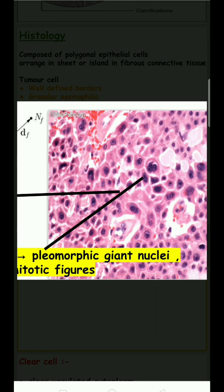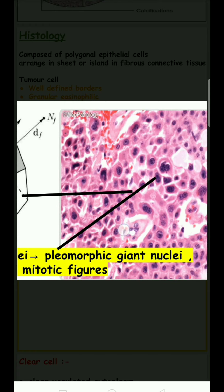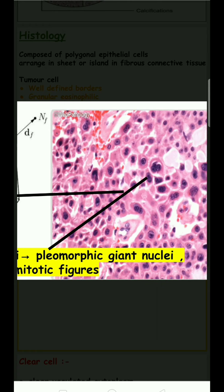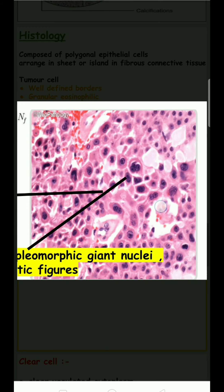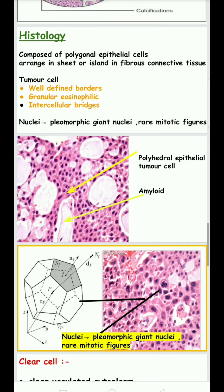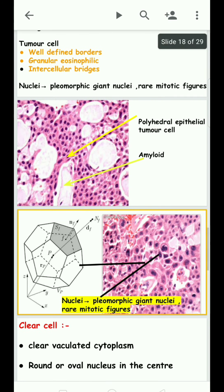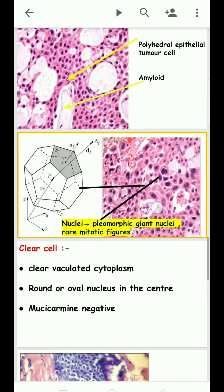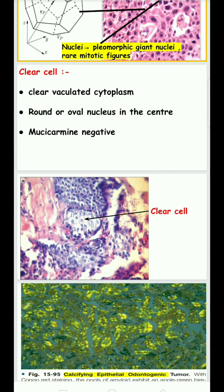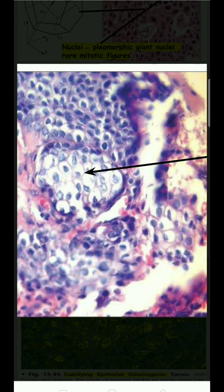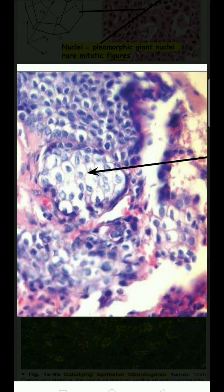The tumor cells are well-defined polygonal cells. Inside the tumor cells, giant nuclei are seen and rare mitotic figures may be present. In clear cell variants, there is a clear vacuolated cytoplasm, which is also seen in mucoepidermoid carcinoma.